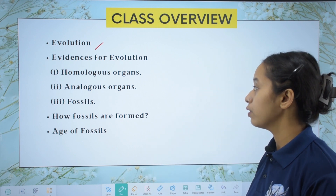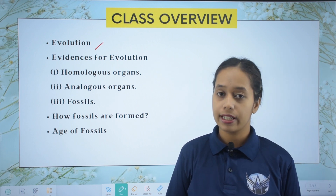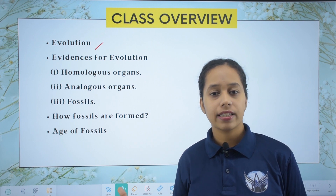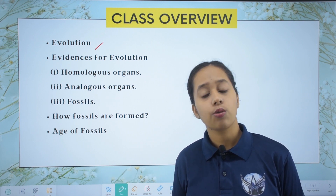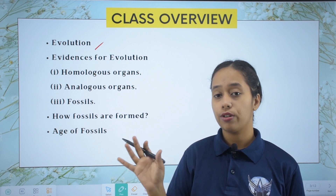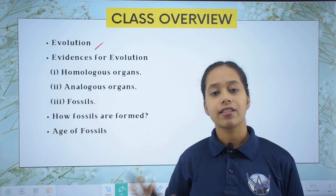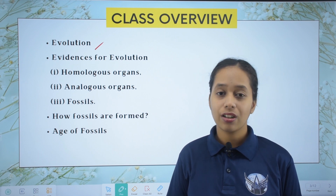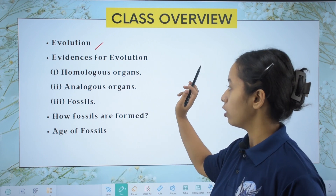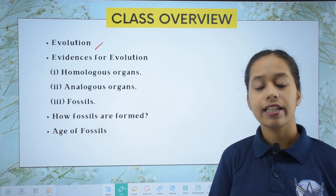Next we will study the evidences for evolution. Scientists say that evolution is real, and there need to be evidences. What are those evidences? Under those evidences, we need to study: number one — homologous organs; number two — analogous organs; and number three — fossils.